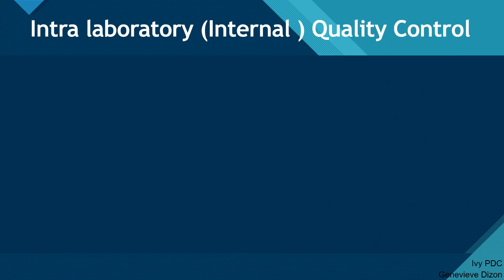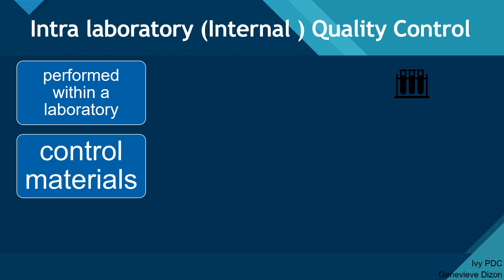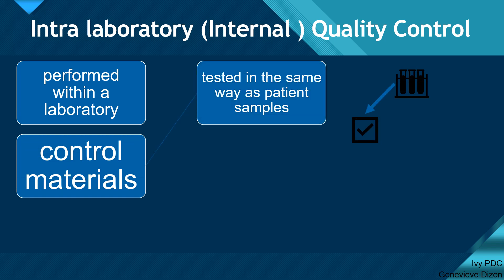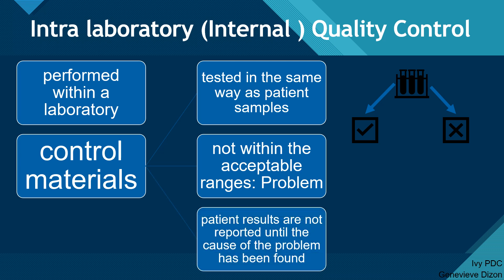Intralaboratory or internal quality control is performed within a laboratory to monitor and ensure the reliability of test results. Control materials are used to monitor the test system and are tested in the same way as patient samples to verify that quality patient test results have been attained. If the results on a control material are not within acceptable ranges, then we assume that there is a problem in the test procedure, equipment, or samples themselves. Patient results are not reported until the cause of the problem has been found and resolved, and the controls are retested to verify that everything is working normally.